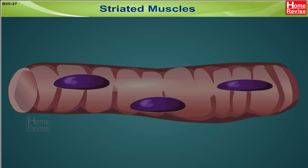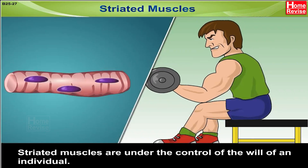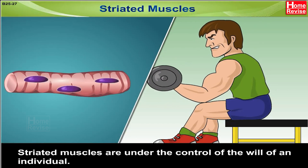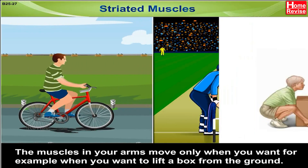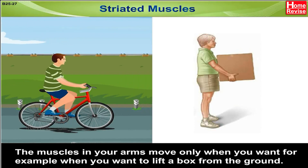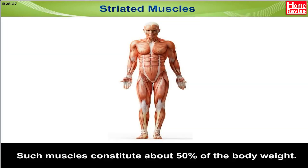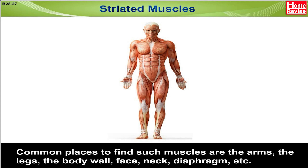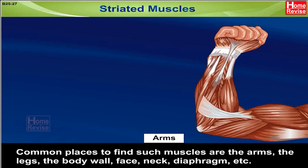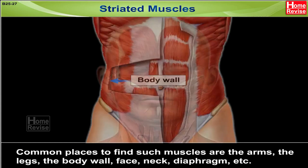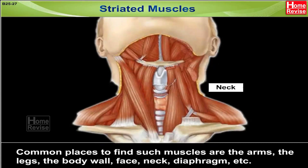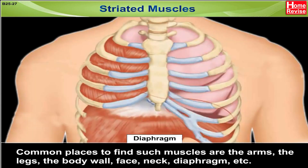Striated muscles are under the control of the will of an individual. The muscles in your arms move when you want — for example, when you want to lift a box from the ground. Such muscles constitute about 50% of the body weight. Common places to find such muscles are the arms, the legs, the body wall, face, neck, diaphragm, etc.